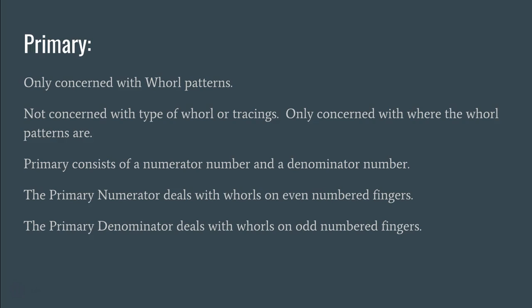The numerator number is the value of the boxes that have whorls in them from the even-numbered fingers: finger 2 (right index), finger 4 (right ring), finger 6 (left thumb), finger 8 (left middle), and finger 10 (left pinky). The denominator deals with the whorls found in the odd-numbered fingers: fingers 1, 3, 5, 7, and 9.